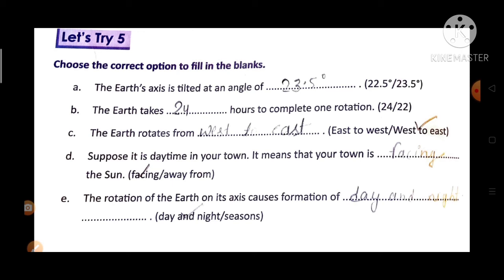Suppose it is daytime in your town, it means that your town is facing the Sun. The rotation of the Earth on its axis causes formation of day and night.